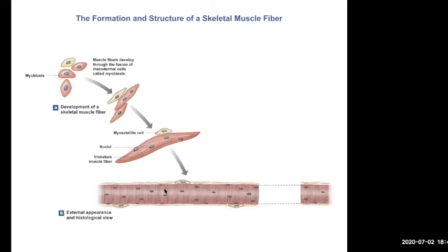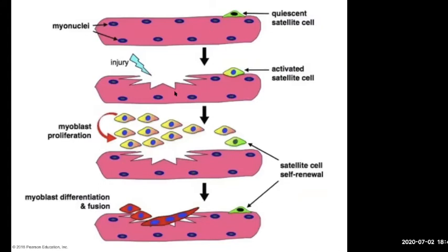The more nuclei you have, the easier it is to build more protein. You also have left over in the adult muscle cell these stem cells called myosatellite cells, and they stay with you for life. In response to some kind of injury or stress-related workout, those myosatellite cells become activated — they divide and then help repair and add onto that muscle cell. So if you started with nine nuclei, after this you'll have four more added to the muscle cell.